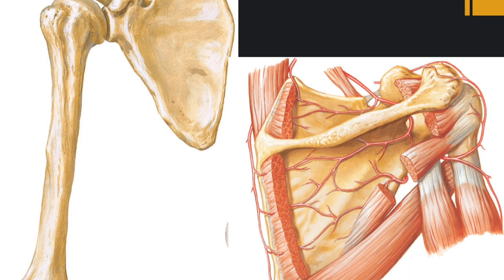Moving to the humerus, here we can identify the anterior aspect where we see the two lips of the intertubercular sulcus, the greater tubercle, and the lesser tubercle. The latissimus dorsi is inserted to the floor of the intertubercular sulcus. The trapezius is inserted not only to the scapula but also to the posterior border of the lateral one-third of the clavicle — in this way the appendicular skeleton is connected to the axial skeleton.